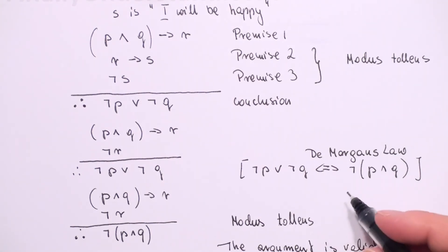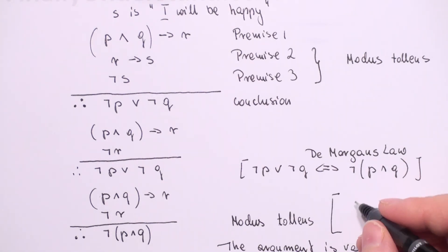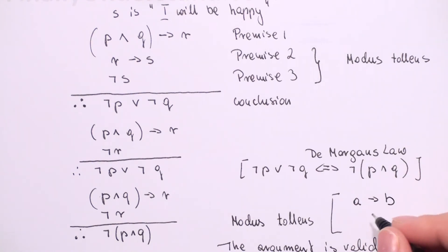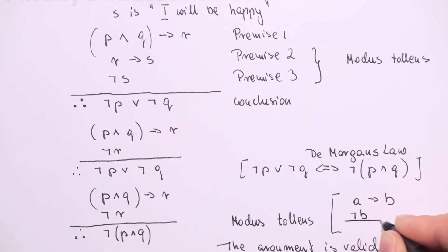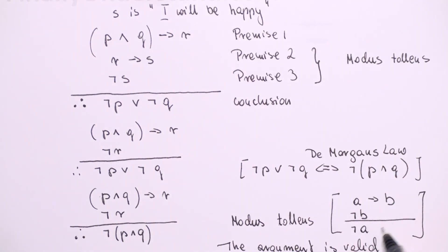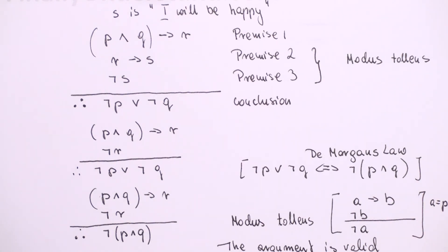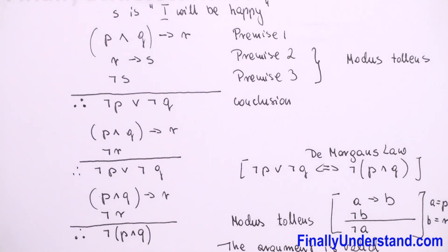Let me remind you of the standard Modus Tollens form: when we have A implies B as the first premise, and ¬B as the second premise, the conclusion is ¬A. We have exactly the same symbolic form here. Our A is equal to (P ∧ Q) and our B is R. So we have exactly the same form, and that is why our argument is valid. This is my solution.